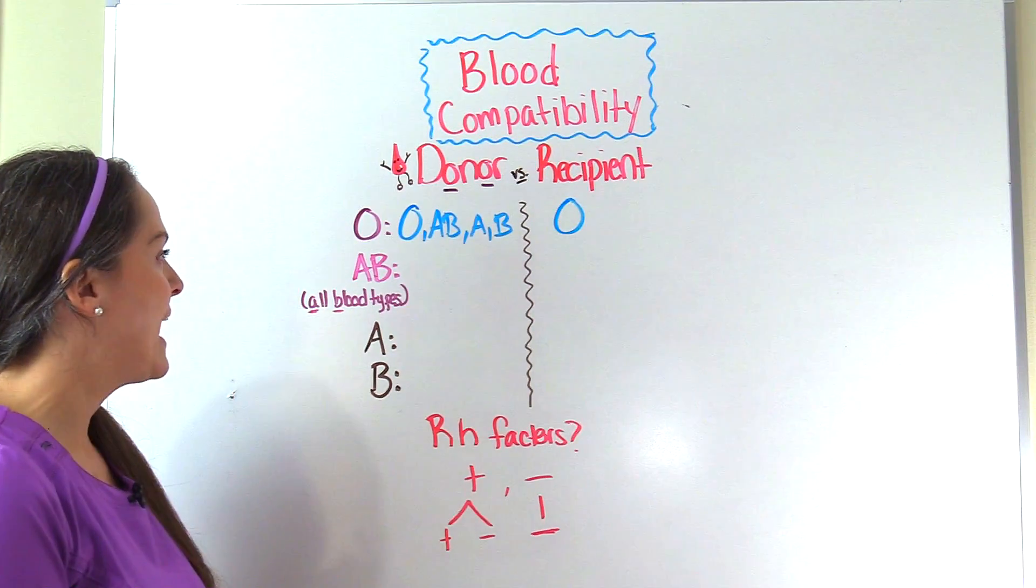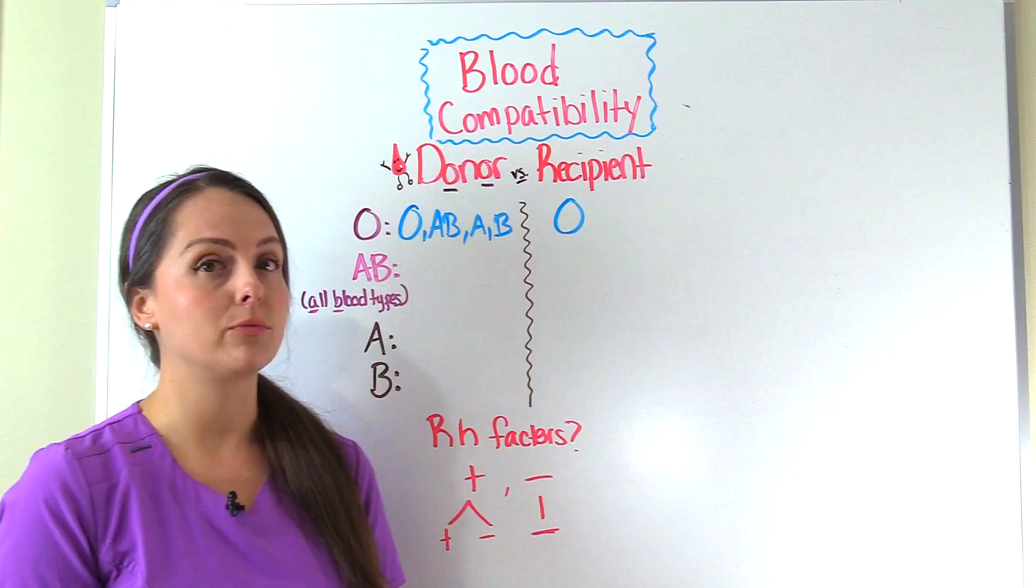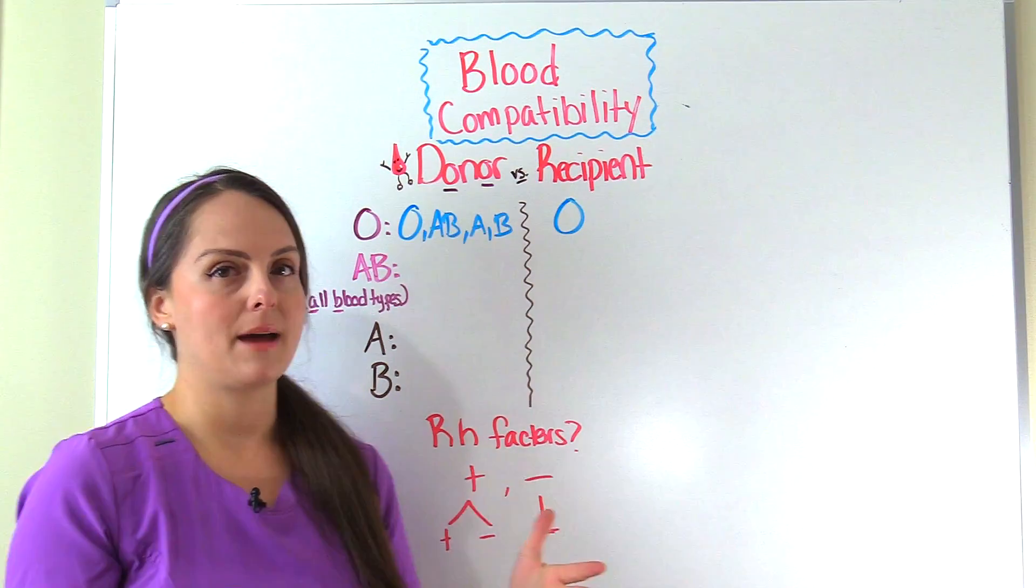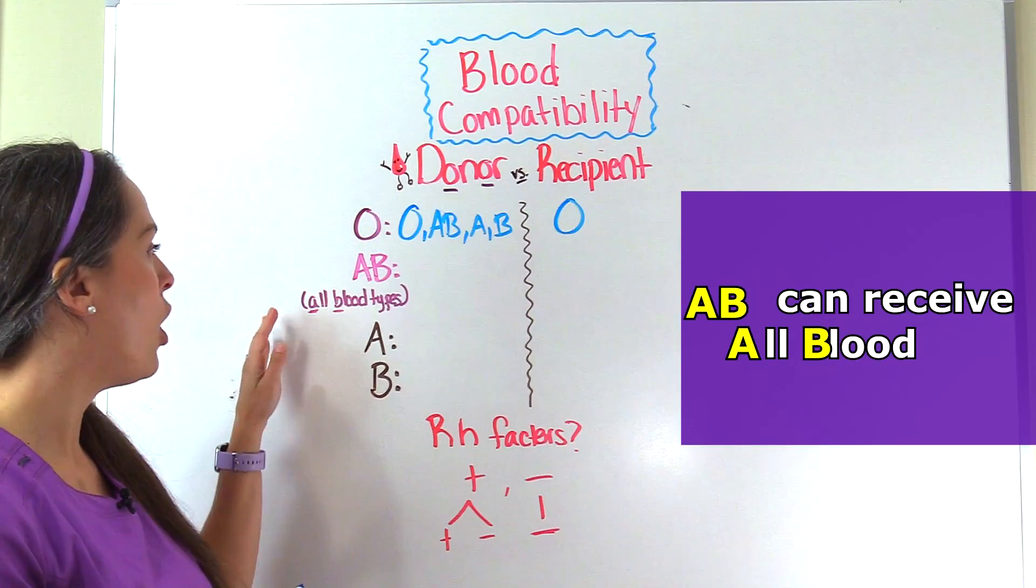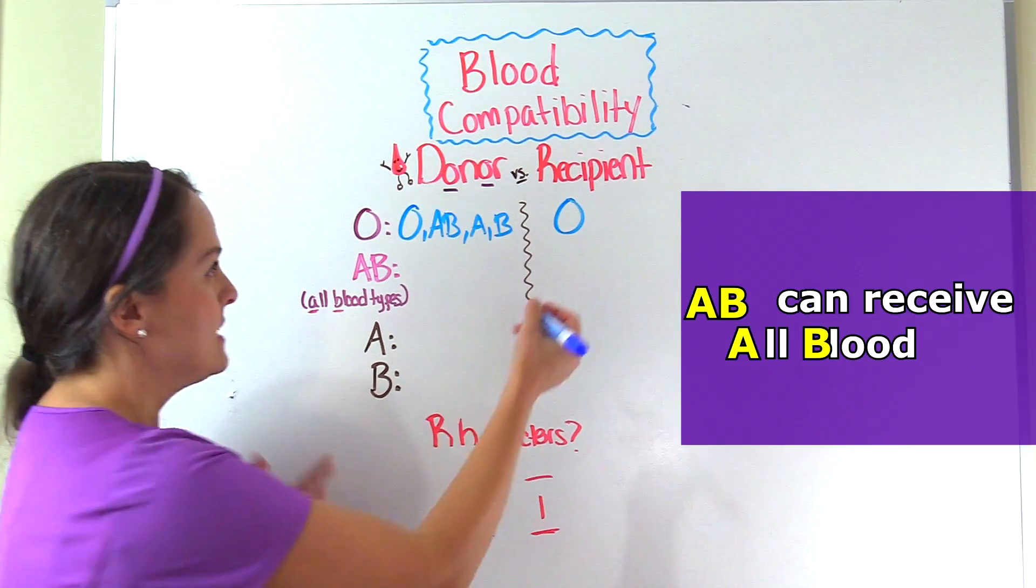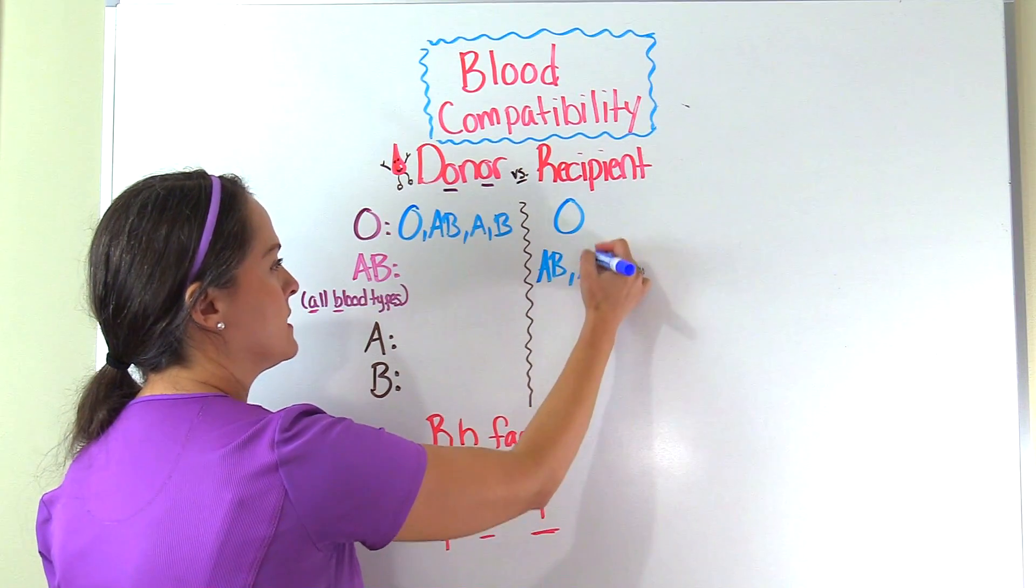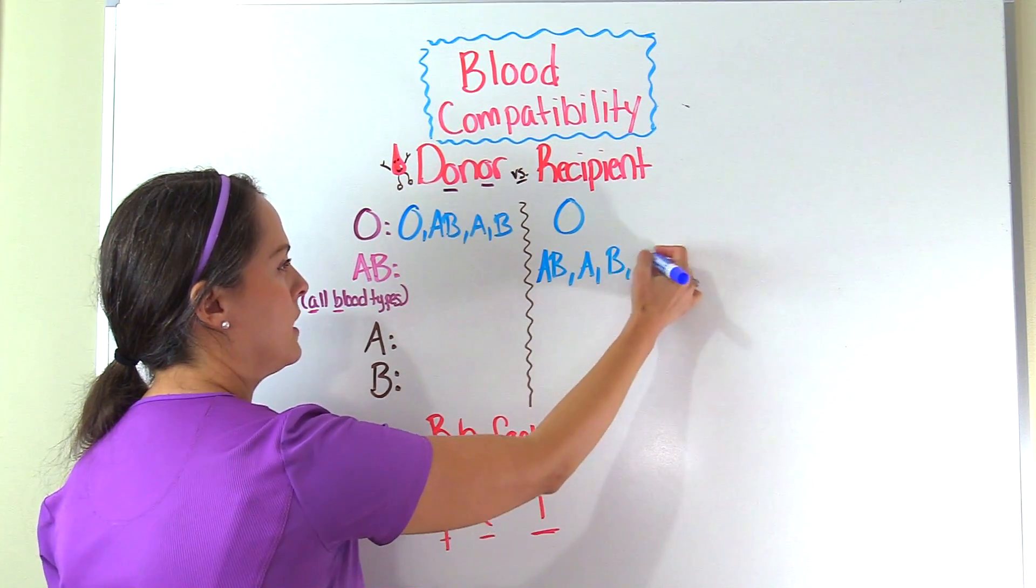Then we have the flip side, AB's. They are the universal recipient and can take blood from all the other blood types. I like to think of them as acquiring all blood types. They can receive from AB's, A's, B's, and O's.